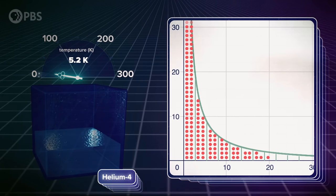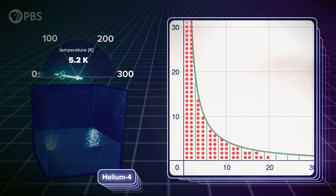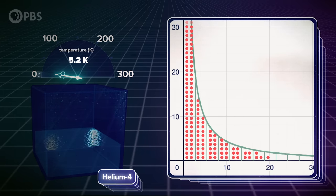If this was a gas of fermions, the inability of particles to occupy the same energy levels would prevent all the particles from falling to the lowest energy states. That has its own bizarre effects, especially at high pressure, but we're talking about bosons here.